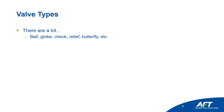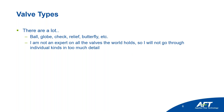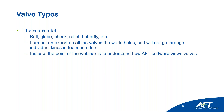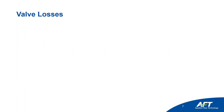There are many types of valves in the world: ball valves, globe valves, check valves, relief valves, butterfly valves — and each one has its own varieties. Rather than going through each individual kind in detail, the point of this webinar is to understand how AFT software views valves so you can leverage that in your modeling. Here is an example model in AFT Fathom with different kinds: manual valves, control valves, check valves, relief valves, and three-way valves.